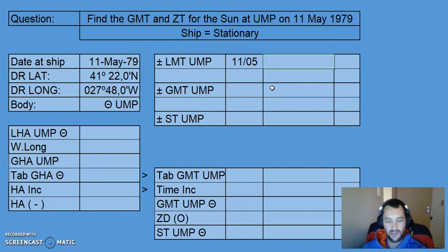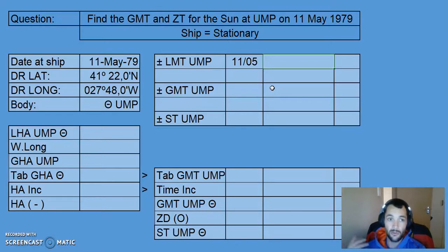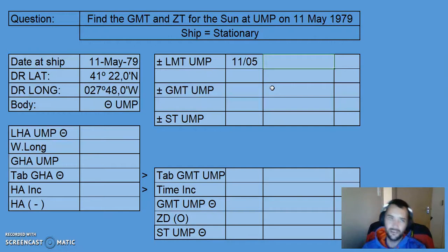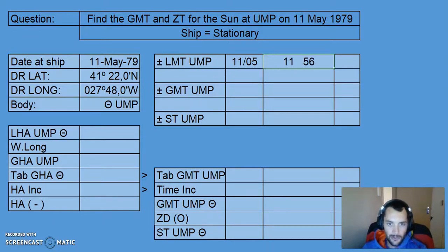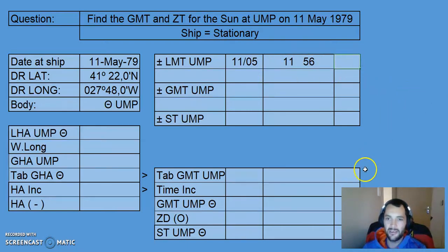The time given there is around about noon — we know that anywhere in the world you would expect the Sun to be on your meridian at more or less noon. We find that time in the almanac on that date, and it is actually 11:56.